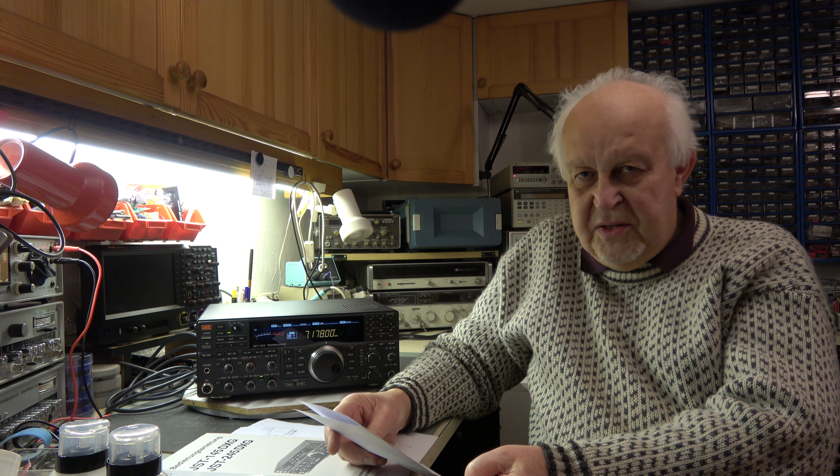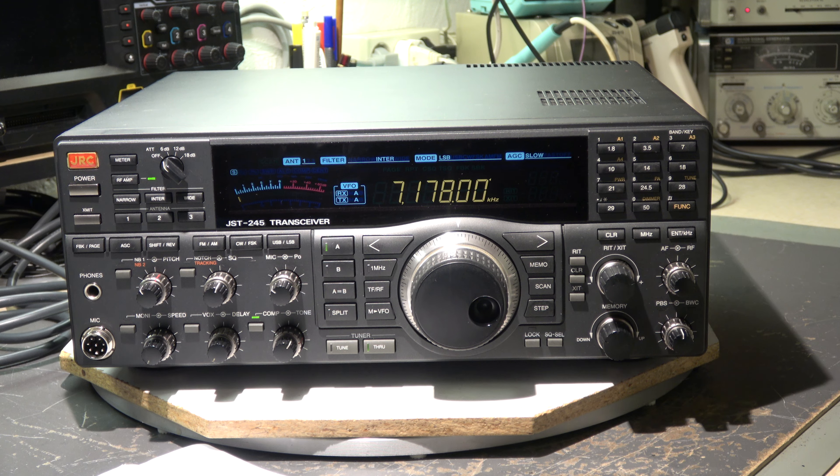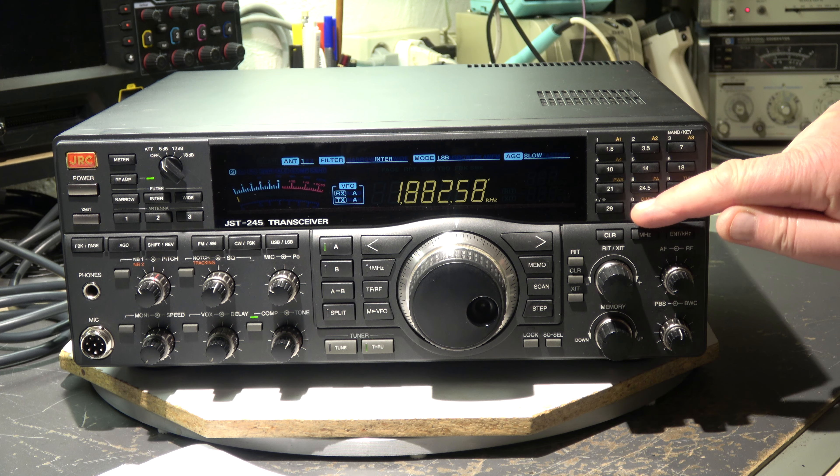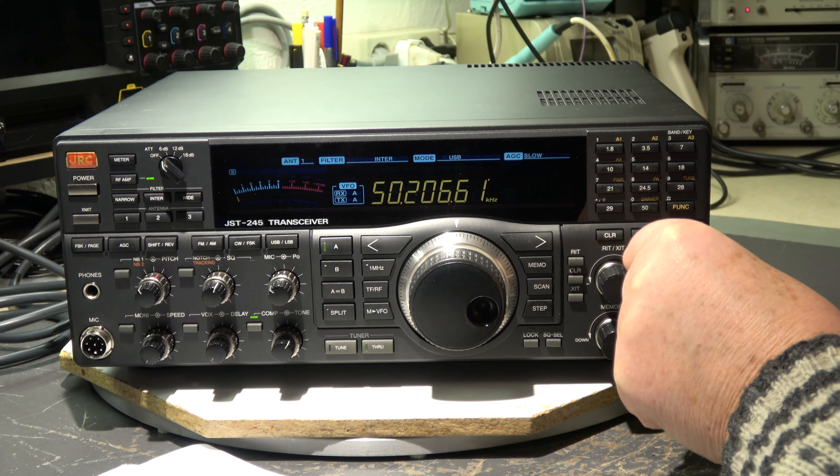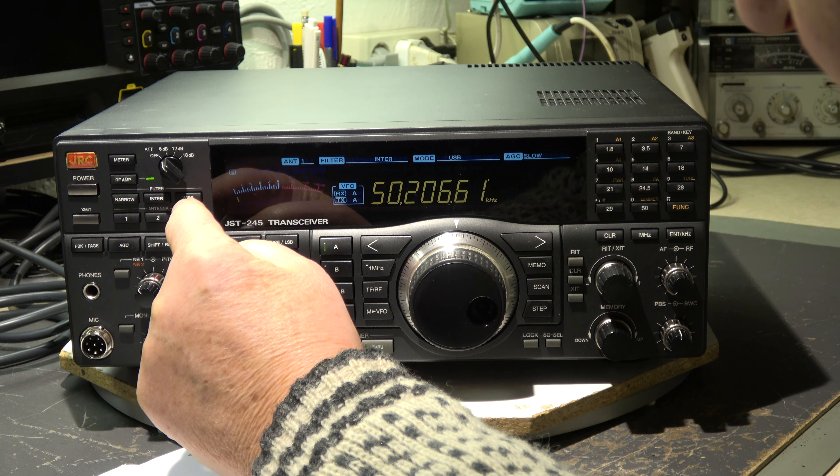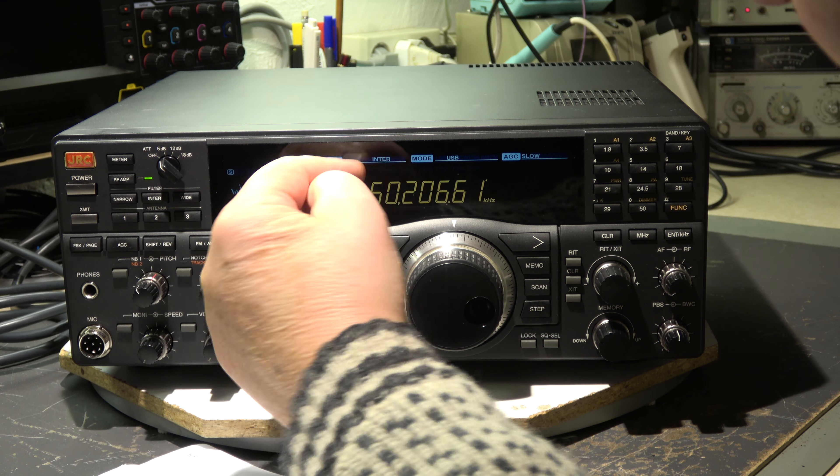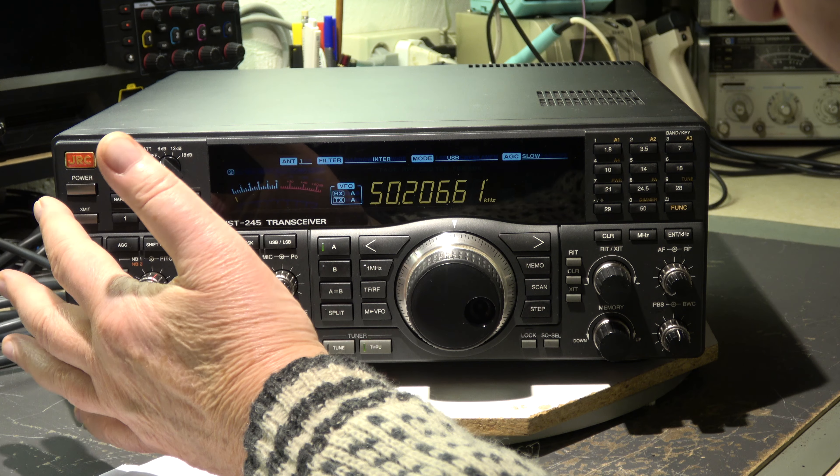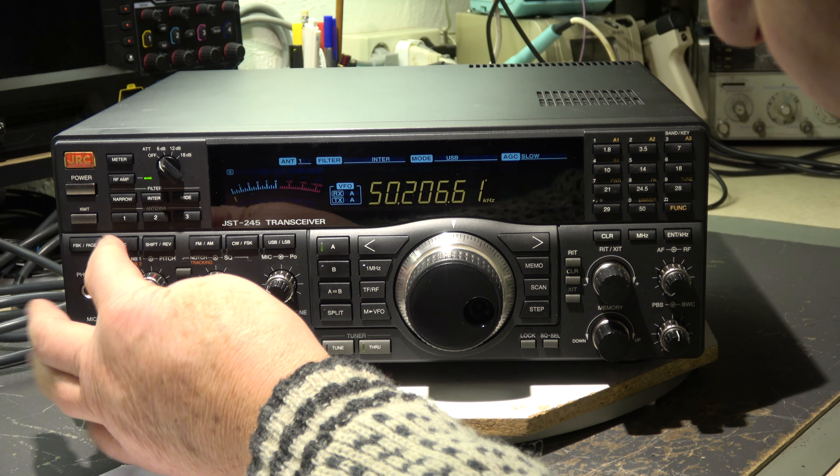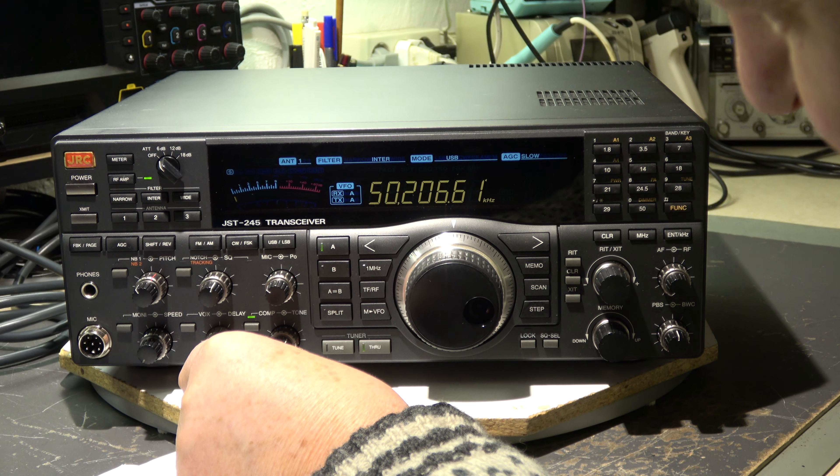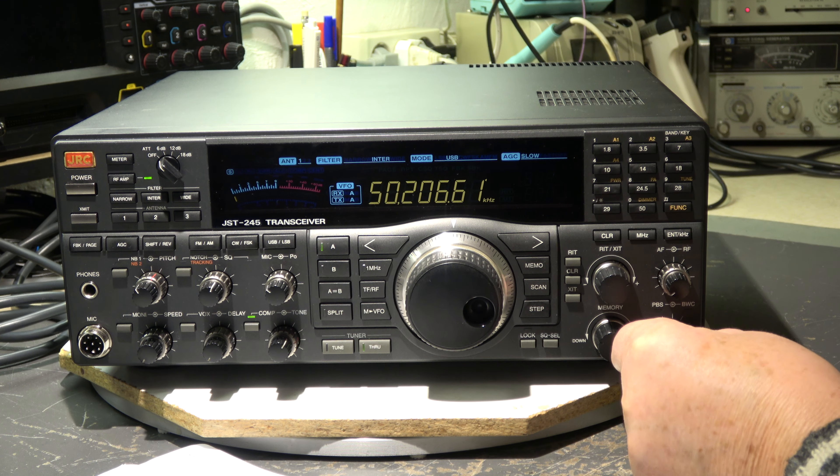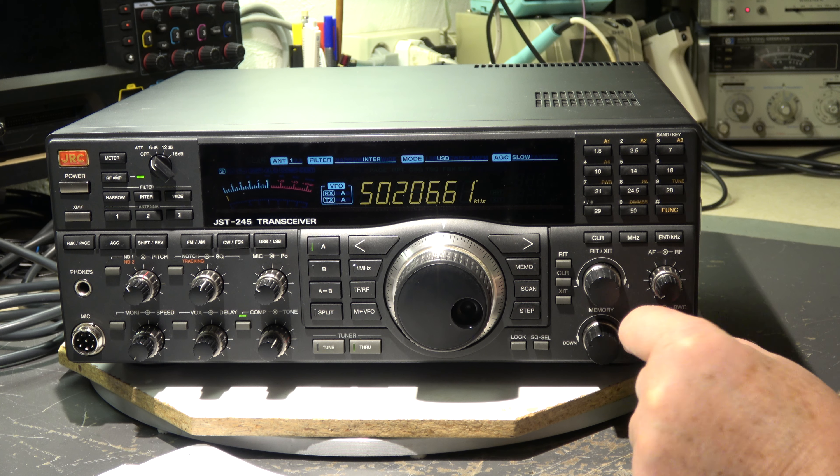While we are waiting, we can have a look at it. There's a band switch, 1.8 megahertz up to 50 megahertz, all modes: SSB, CW, FM, AM. The filter obviously is installed, a wide filter and the intermediate filter. I think it is three kilohertz or so. Narrow is obviously not installed. RF amp, attenuator, AGC, a lot of switches for noise blanker, notch, whatever we think.